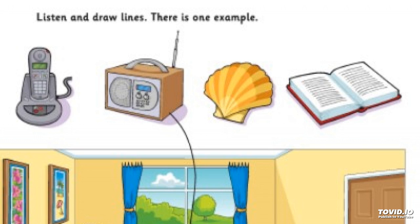One. Is this your friend in the picture with you? Yes, it is. What's his name? His name's Alex. How do you spell that? A-L-E-X. Two. Is he in your class at school? Yes. We're in class eight. Sorry? In class eight. And we've got a great teacher.